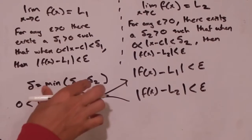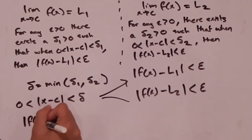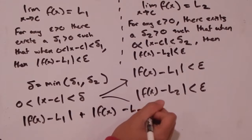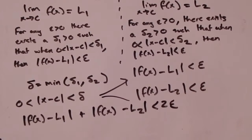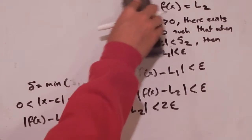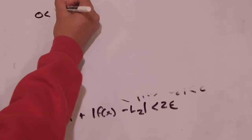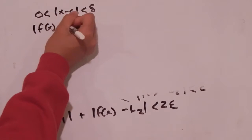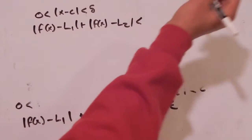There's something we can do with this. While we're in this interval, these two statements hold true, and we can do a little algebra to see how they relate. We can say that the absolute value of f of x minus L1, plus the absolute value of f of x minus L2, is going to be less than 2 epsilon. And this is where it gets kind of tricky.